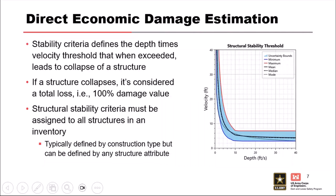So how does economic loss work within LifeSim? We've talked a lot about structure stability. If a structure is washed away, for life loss we say they're in a high-lethality situation. For economic loss, if we think a structure is washed away, we assume it loses 100% of its value. So if that house was worth $100,000 and it gets washed away, we assume $100,000 worth of damage. Things like whether it's wood frame or masonry are still going to be important for economic loss, just like they were for life loss.